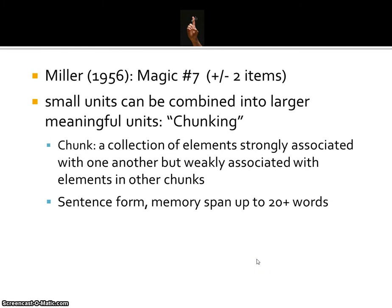Miller was the first to coin what he called the magic number seven — the average capacity being seven plus or minus two items, so between five to nine is the average capacity of short-term memory. But we can actually remember more information in short-term memory if we are able to combine larger meaningful units into smaller units called chunking. A chunk is a collection of elements strongly associated with one another but weakly associated with elements in other chunks. In sentence form, we can actually keep up to 20 words or more in our memory span.